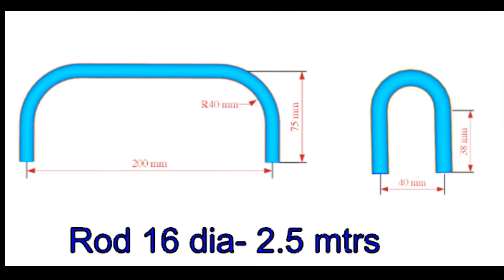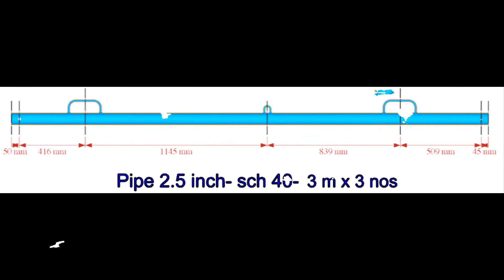16 mm diameter rod for 6 numbers handles and 3 numbers hooks. The legs of the tripod are made from 2.5-inch, 40-schedule pipe. The length of each leg is 3 meters each.